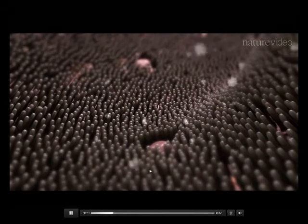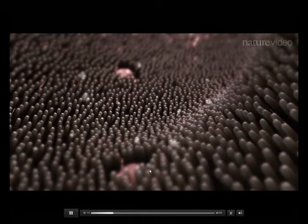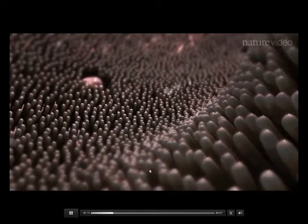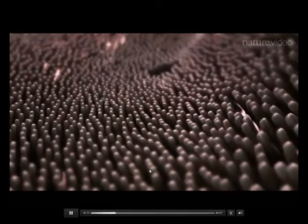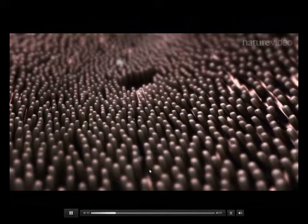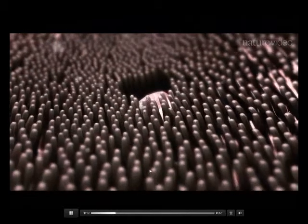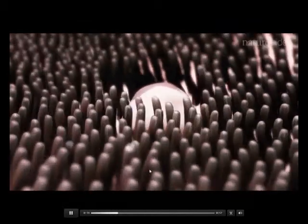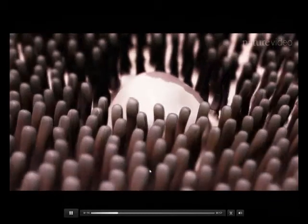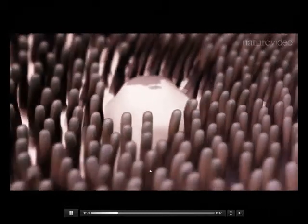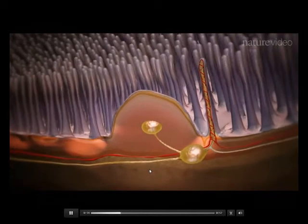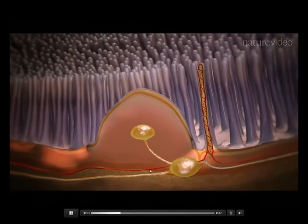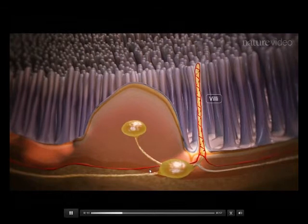The intestinal surface is covered with finger-like protrusions called villi, whose primary function is the absorption of nutrients. However, these structures and the underlying tissue also host the body's largest population of immune cells. Dotted along the intestinal mucosa are dome-like structures called Peyer's patches. These are enriched in lymphoid tissue, making them key sites for coordinating immune responses to pathogens while promoting tolerance to harmless microbes and food.